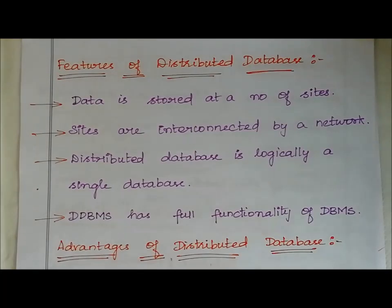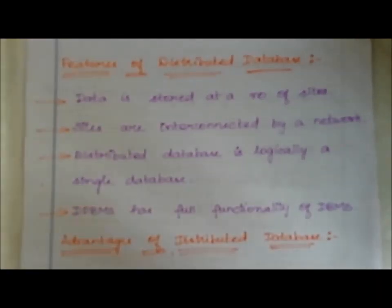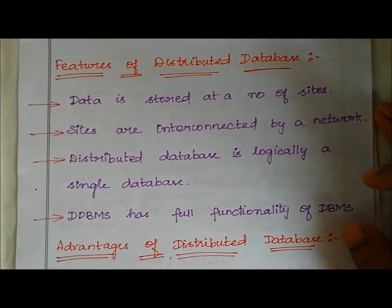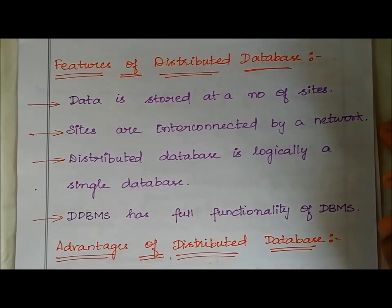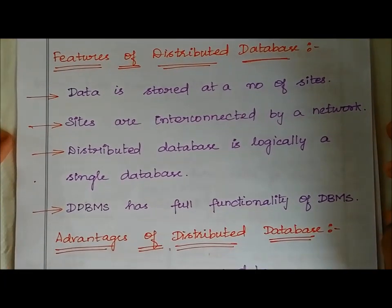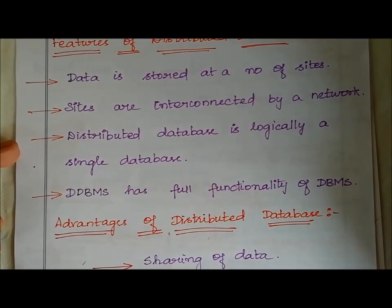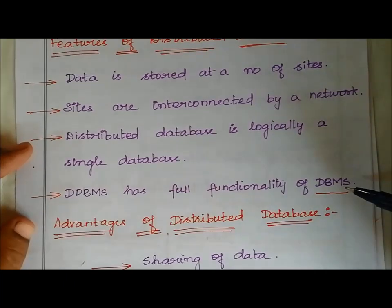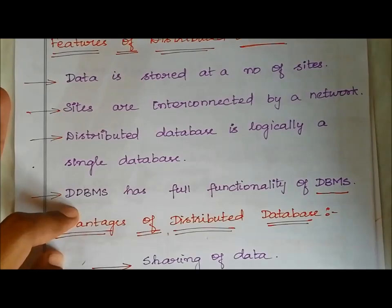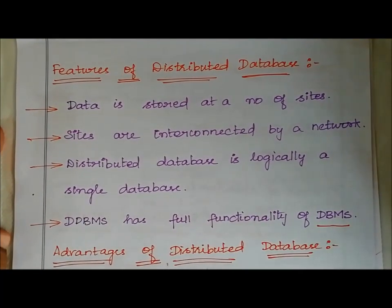The features of a distributed database: data is stored at a number of sites. The distributed database is logically a single database even though the databases are at different locations — all databases are considered as a single database. Also, distributed DBMS has the full functionality of a regular DBMS.